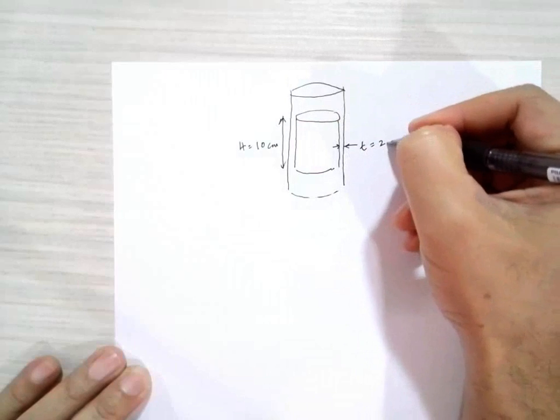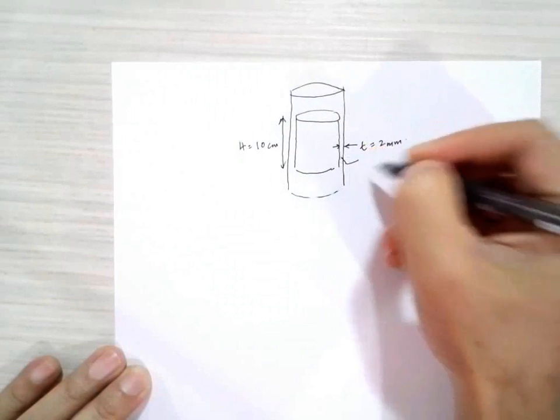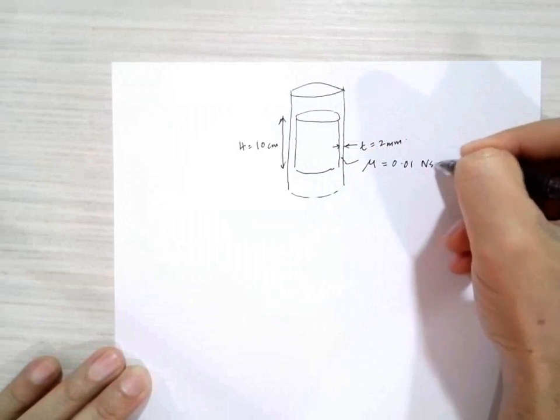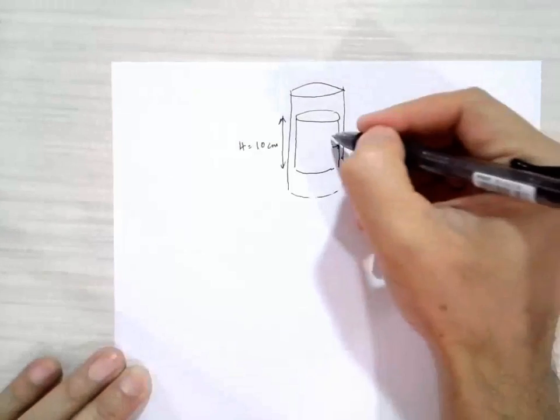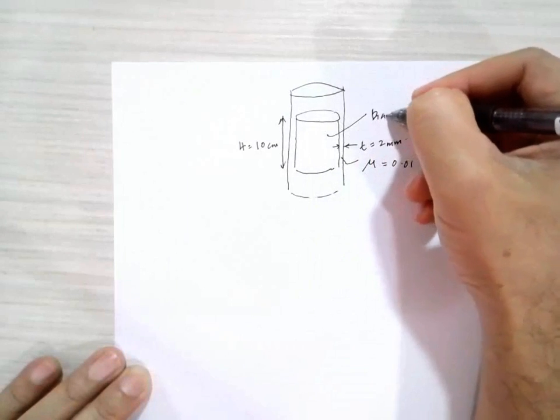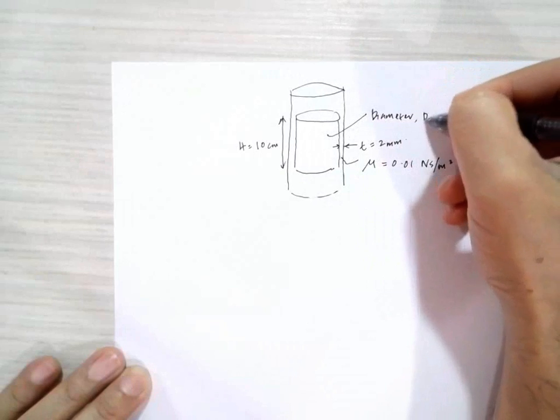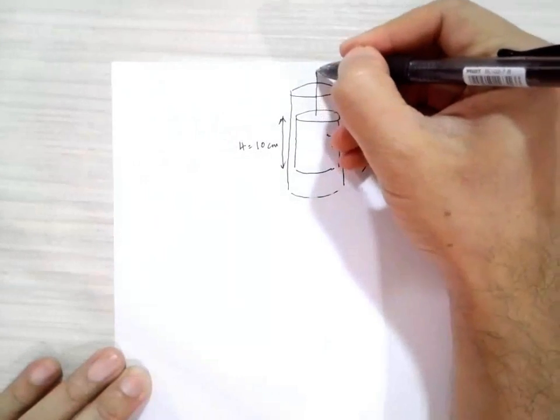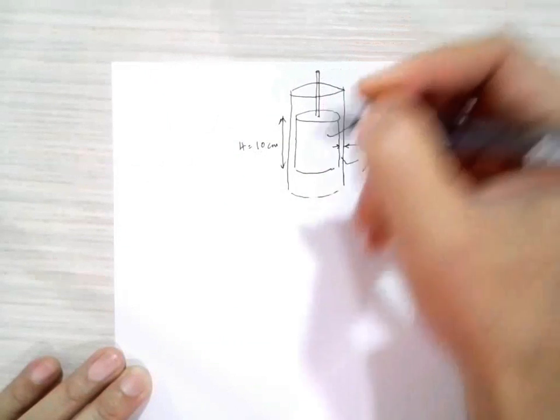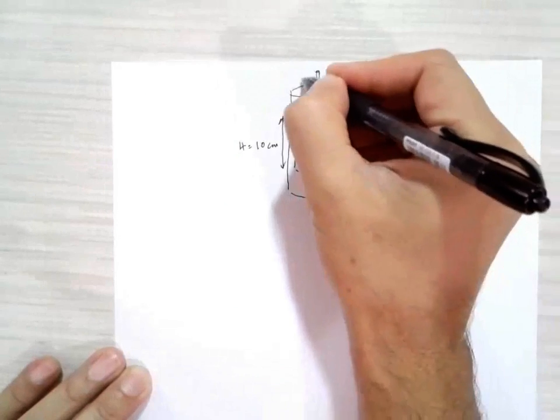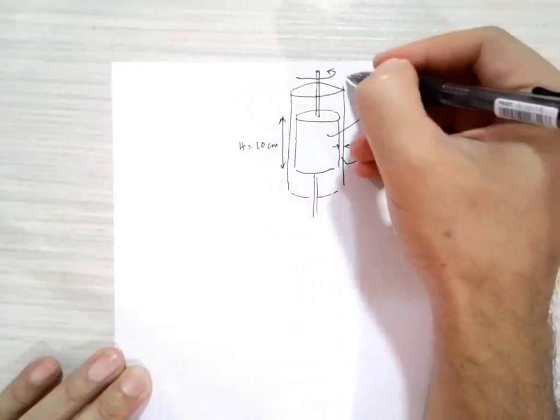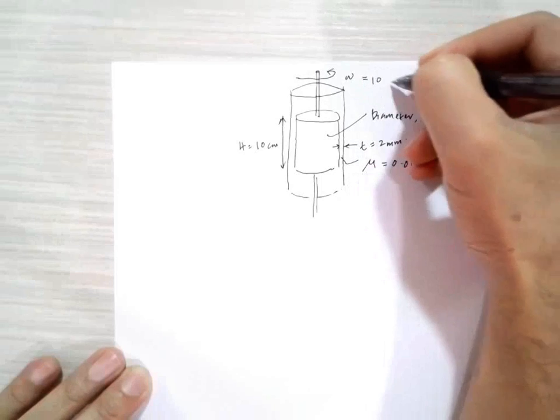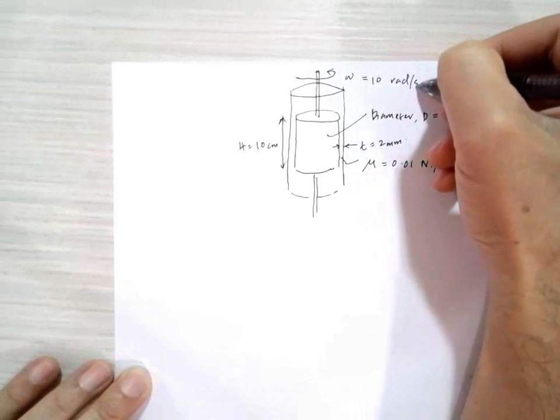The viscosity of the oil is μ equal to 0.01 newton second per meter squared. The diameter is 10 centimeters and the cylinder is connected to a shaft that is rotating at omega equal to 10 radians per second.